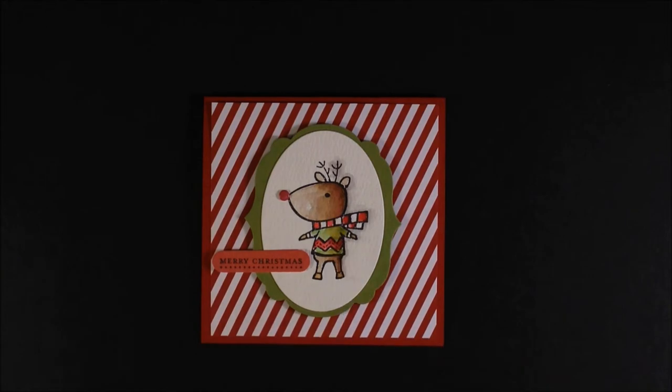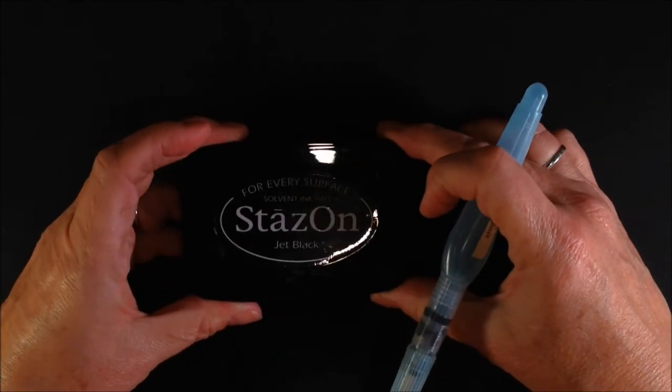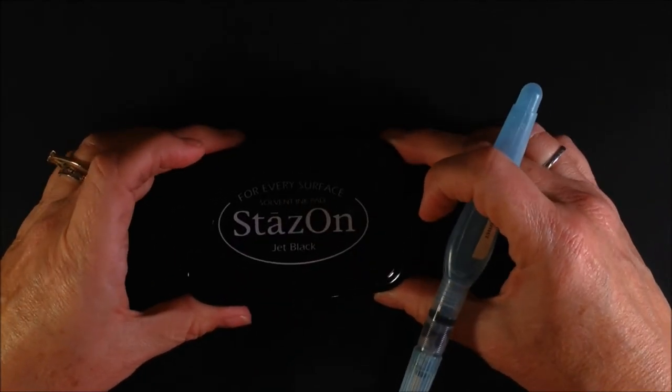How to get the shading and what type of paper to use. First you're going to need a StazOn ink pad. StazOn is called that just because of that - it's a solvent-based ink, very waterproof.